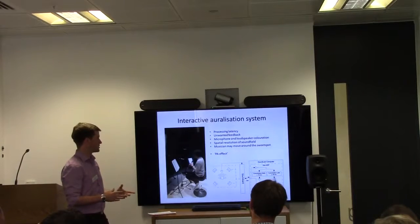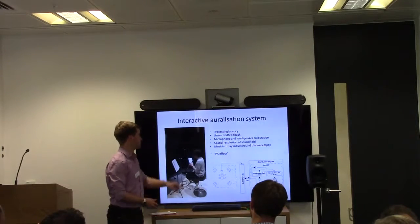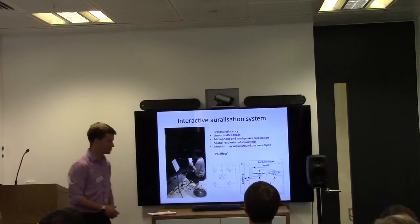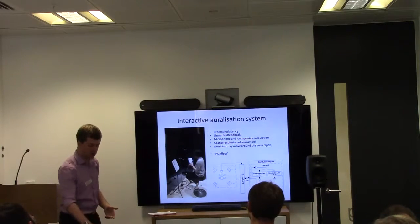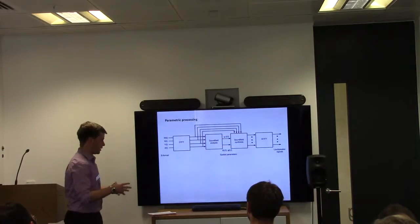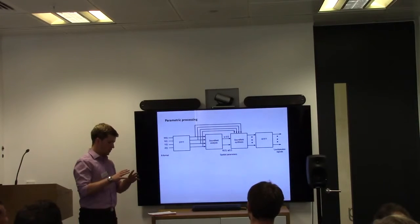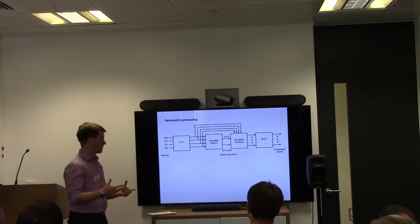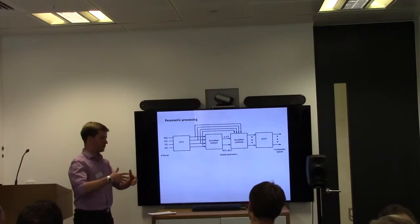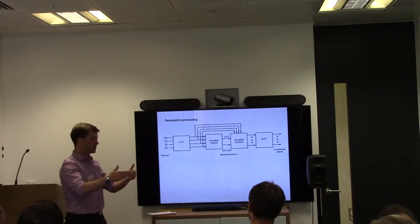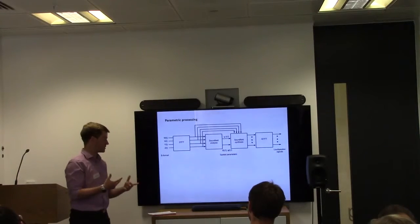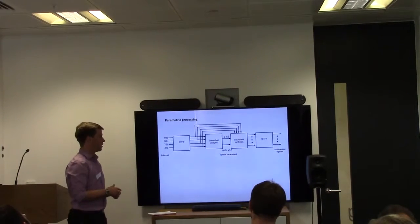The two aspects I'd like to focus on are the spatial resolution of the sound field and the musician moving around the sweet spot. When the musician moves around the sweet spot, they hear a lot of phasing and colouration. This is due to first-order ambisonic signals played over loudspeakers being highly correlated, so it's straightforward to understand that there would be a lot of phasing and colouration.